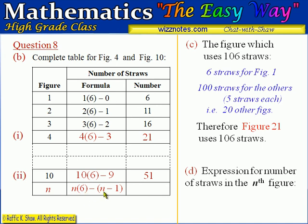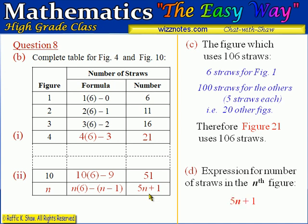Expanding the formula: 6n minus n gives 5n, and minus minus 1 gives plus 1. So the expression simplifies to 5n + 1. This is the expression that calculates the number of straws in the nth figure. That's the solution for question 8, and we will look at question 9 in our next video.